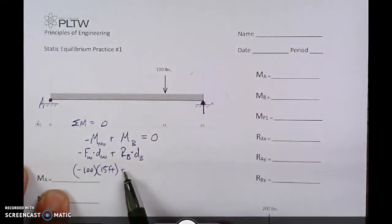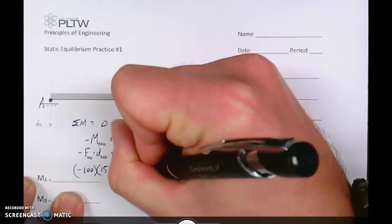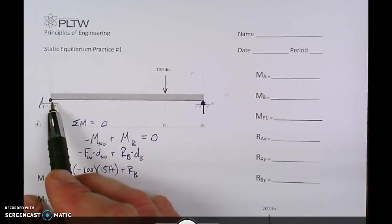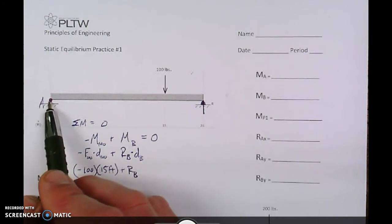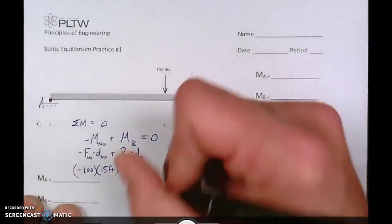I'm going to add that to the reaction force at B, which we don't know. So, reaction force at B, I'm going to leave as a variable, and then the distance to B. The distance to B, remember, is all still from the point of rotation, which we established as A. You could have chosen B if you wanted to, but I just randomly chose A. I always start with the pin. And so it is 20 feet all the way to B.